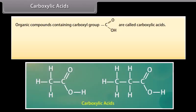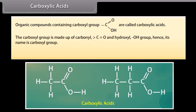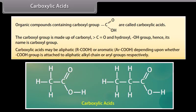Carboxylic acids: organic compounds containing a carboxyl group are called carboxylic acids. The carboxyl group is made up of a carbonyl group and a hydroxyl group, hence its name is carboxyl group. Carboxylic acids may be aliphatic or aromatic depending upon whether the carboxyl group is attached to an aliphatic alkyl chain or aryl groups, respectively.